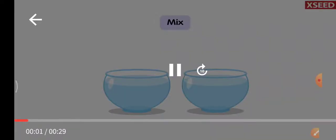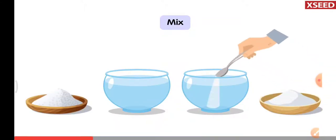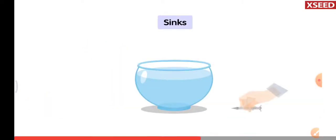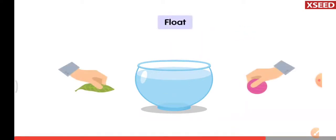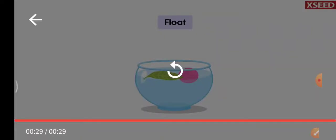Different things act differently in water. Salt and sugar mix in water. The iron nail sinks in water. Leaf and ball float in water. From the video we understood that sugar and salt dissolve in water, the iron nail sinks, and the leaf and ball float in water.